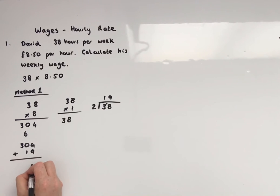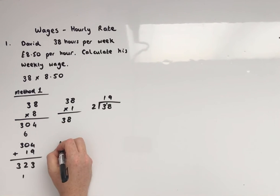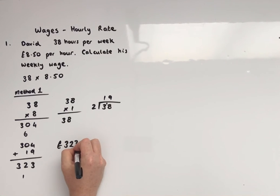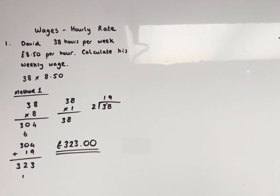Okay, so we've got £304 plus £19. So 4 and 9 is 13. 1 and 1 is 2, that's 20 in the tens column, and £300. Okay, so David's wage for that week is £323 and no pence. Okay, so that's method one.